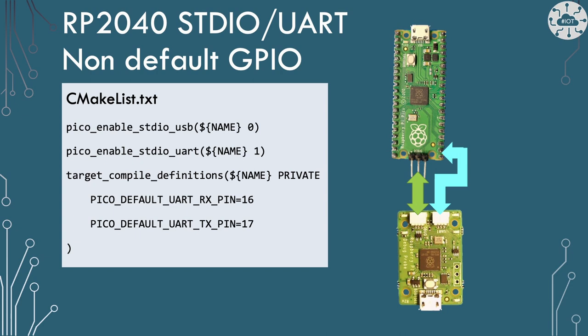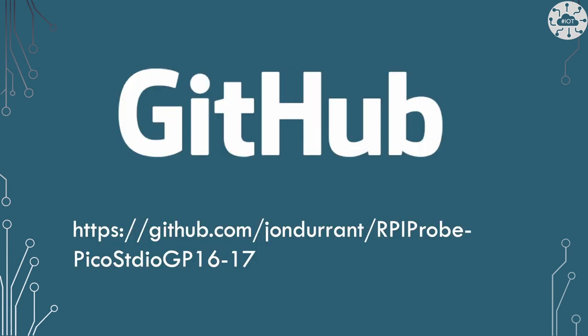If, like me, you have used GPIO 0 and 1 for other things in your project, or you just want to use pins closer to the SWD port to look a little cleaner on the breadboard, then you can redefine the default UART pins. Update the CMake file to include these definitions — I've moved the standard IO to be over GPIO pads 16 and 17. Do note that although the name of these definitions is 'pins', they do not refer to pin numbers on the Pico, but to the GPIO pad numbers. I've built a little project to show how to redefine the standard IO UART pads over in my GitHub repo — I'll put the link in the description.